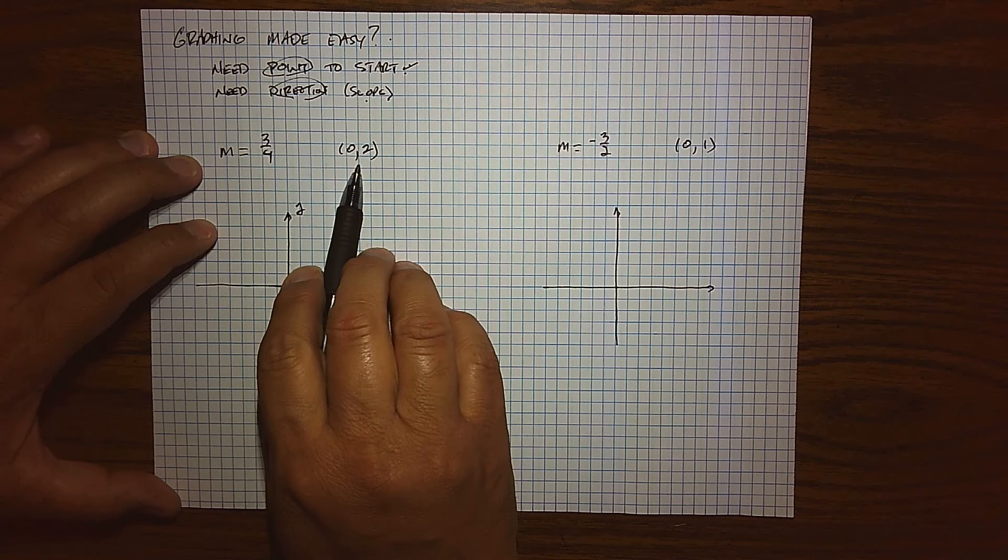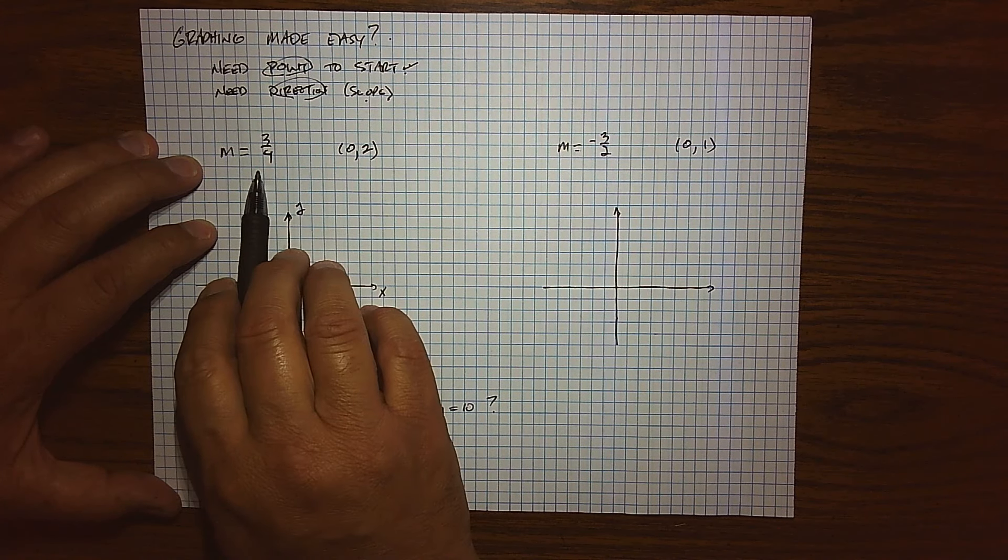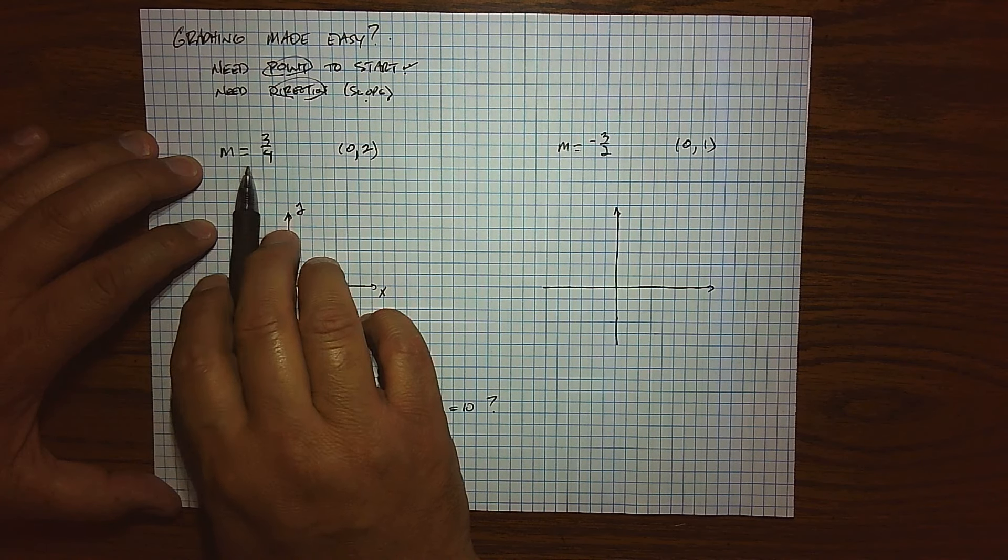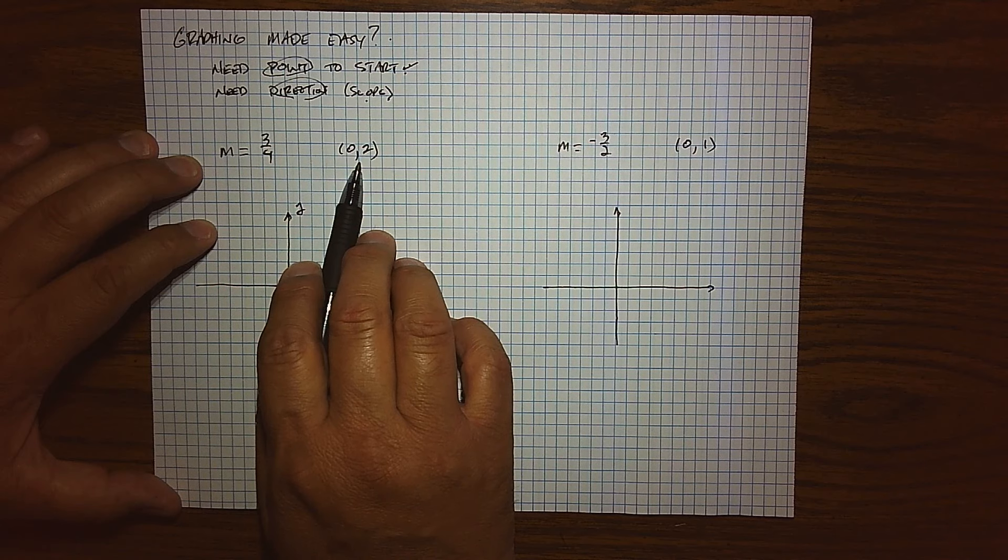I have to give you a point, where are you located at, where do you want to start, and then I have to tell you how to move. So remember, a slope is not a point, it's a direction of movement. A point is an ordered pair. So how does this help me graph?